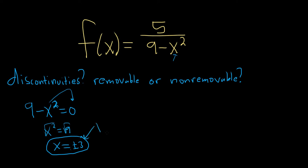Since these are vertical asymptotes, the answer is non-removable.